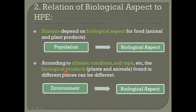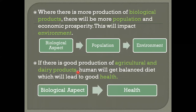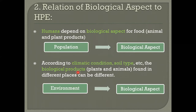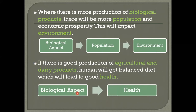According to climatic conditions, soil type, and other environmental factors, the biological products — plants and animal products — found in different places can be different. If climatic conditions and soil type are favorable, there will be more biological production; otherwise, there can be less production.